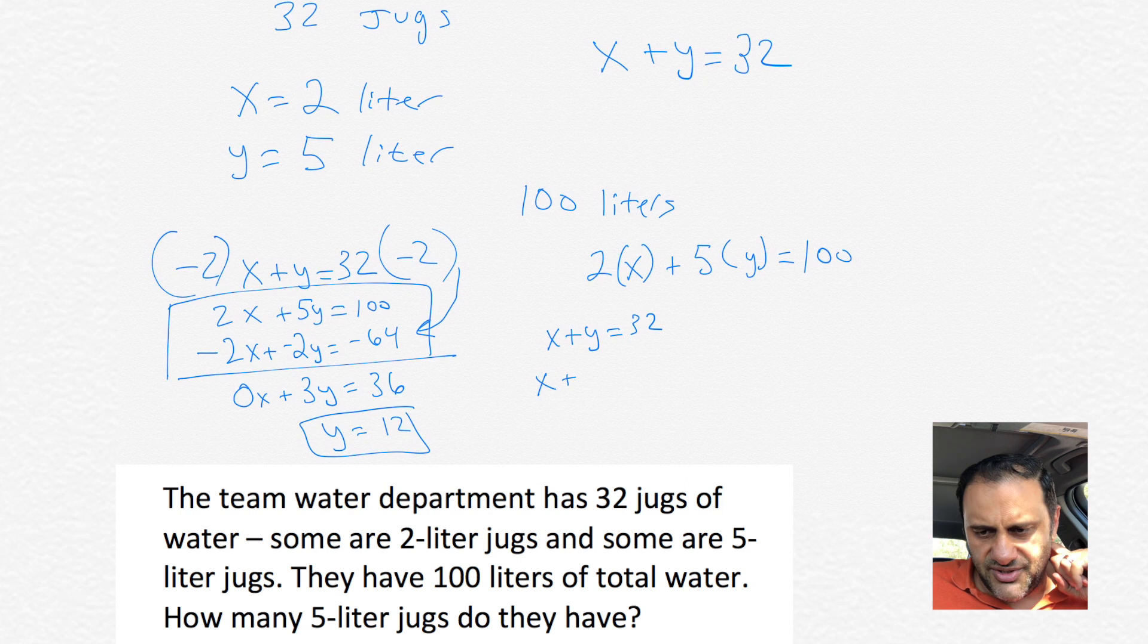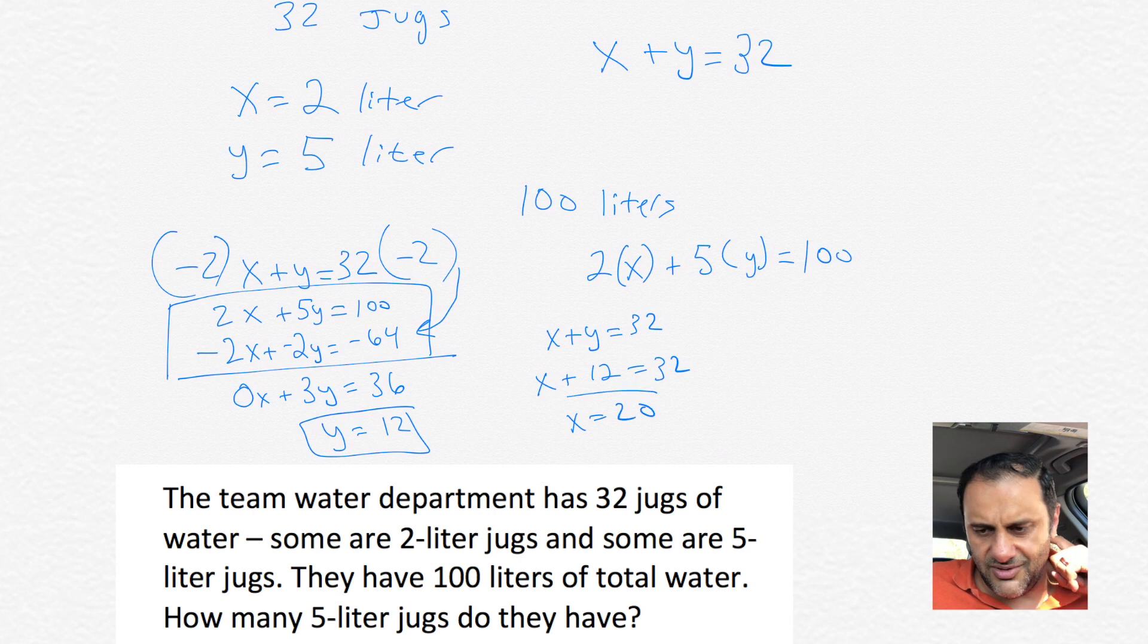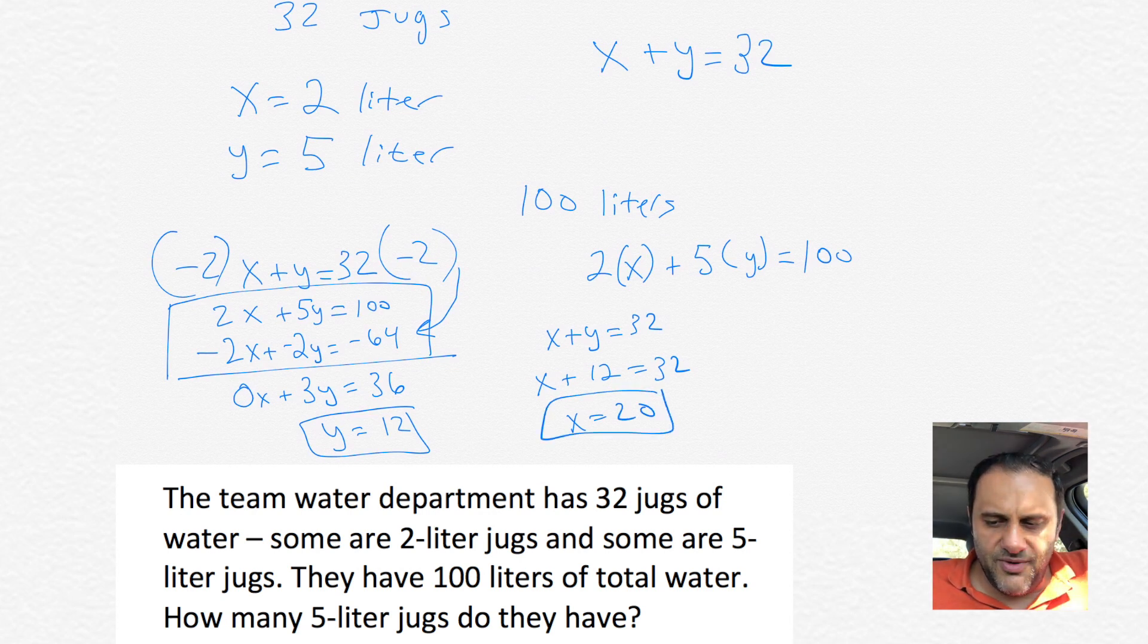Once we get Y equals 12, we could figure out what X is. We have X plus Y equals 32. We punch in 12 for Y, we're gonna get X plus 12 equals 32, so X equals 20.